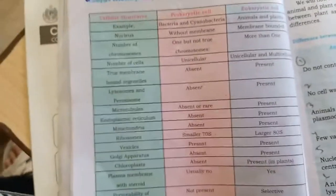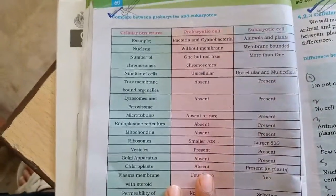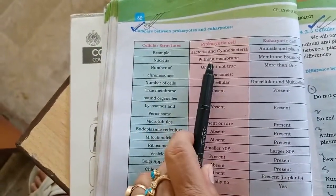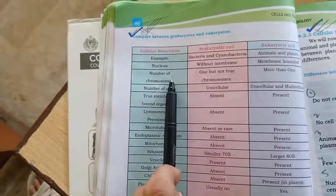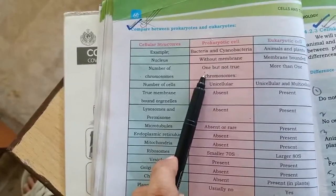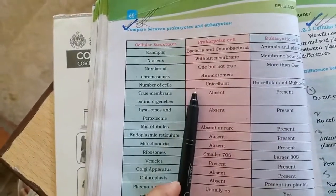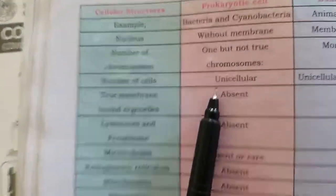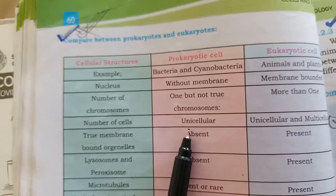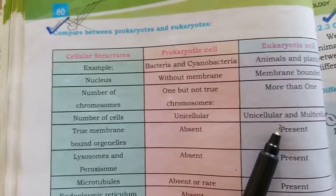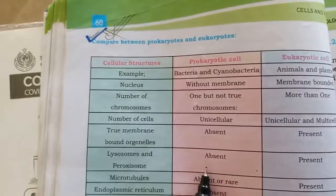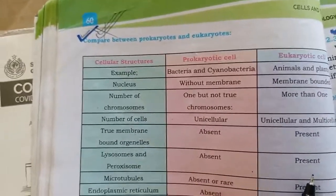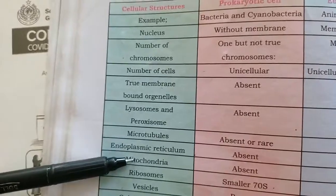Prokaryotes are organisms which do not have a proper nucleus, while eukaryotes are organisms which have a proper membrane-bounded nucleus. I will read through the comparison chart quickly. Number one: prokaryotes lack a nuclear membrane, while eukaryotes have a membrane-bounded nucleus. Prokaryotes are mostly unicellular, like bacteria.